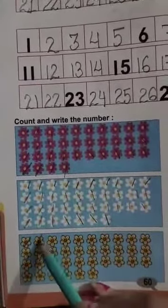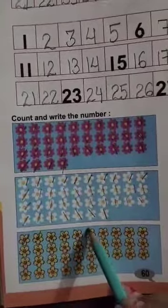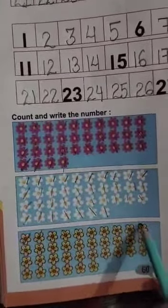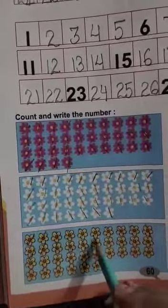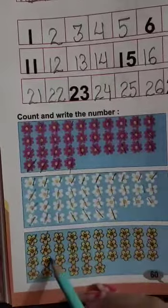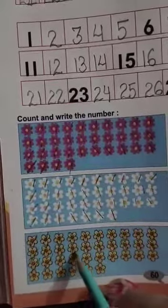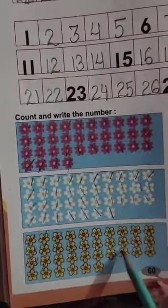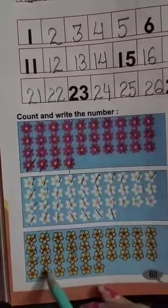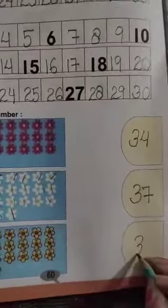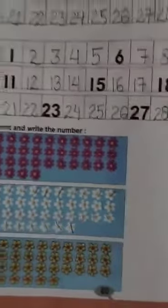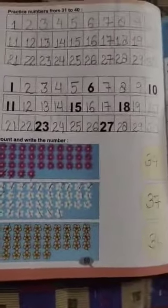Now we will count yellow fun flowers. 1, 2, 3, 4, 5, 6, 7, 8, 9, 10, 11, 12, 13, 14, 15, 16, 17, 18, 19, 20, 21, 22, 23, 24, 25, 26, 27, 28, 29, 30, 31, 32, 33, 34, 35, 36. So here we will write 36.